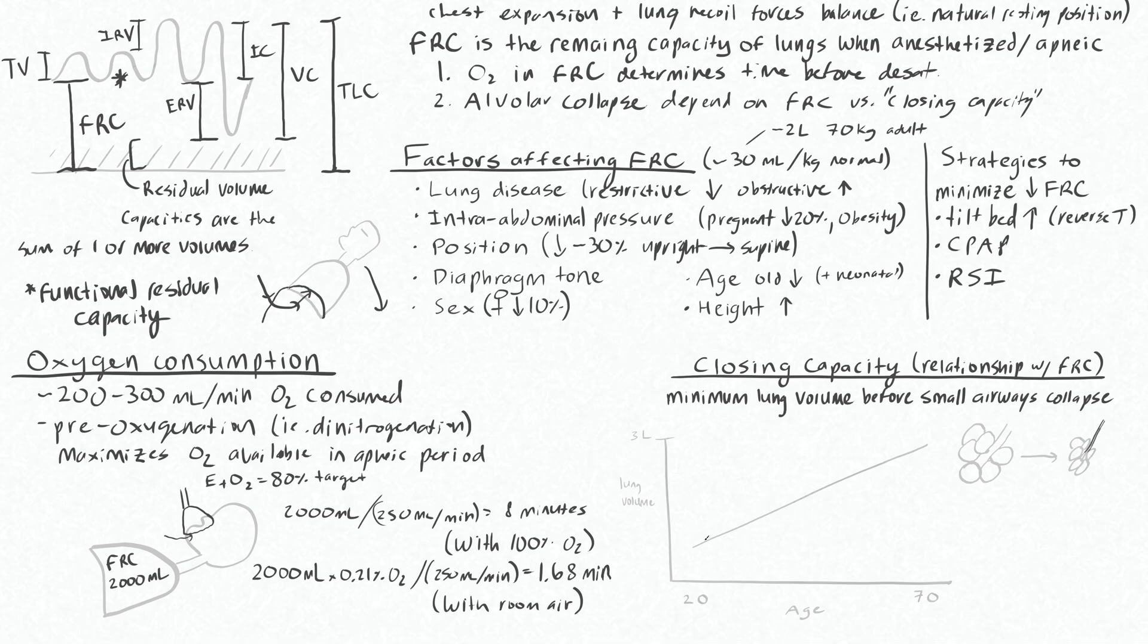This minimum volume needed to prevent collapse increases as you get older. When you're young, you need very low lung volumes before your small airways would start to collapse, whereas when you're elderly, you need quite high volumes in your lungs to prevent the collapse of the small airways.